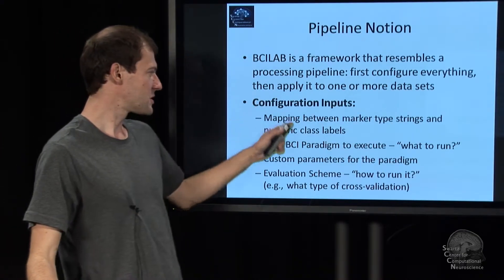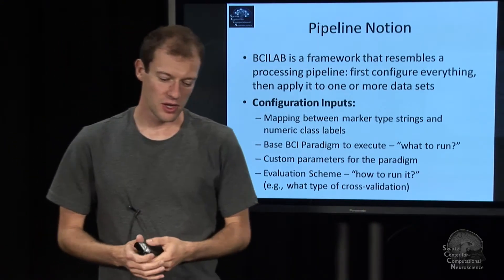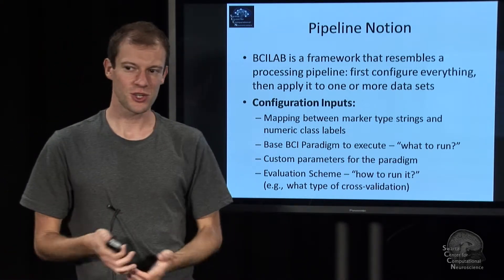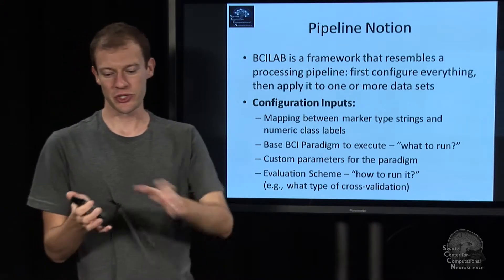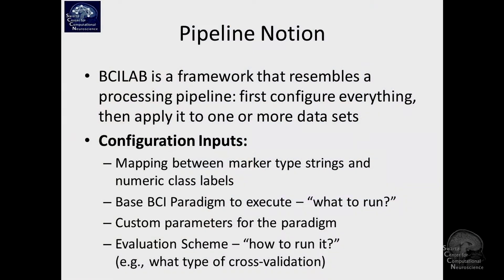The pipeline has some key inputs it needs to know before it can do anything. Obviously you always need a dataset to crunch. But aside from the dataset — which is just time series and perhaps some markers — any machine learning part needs to know how marker strings like 'stimulus one' and 'response three' relate to numerical class labels, like plus one or minus one or continuous values. So there has to be some mapping that you put in somewhere.